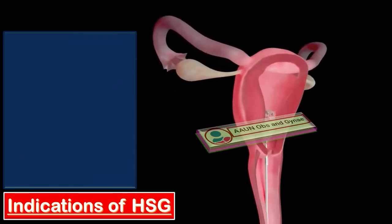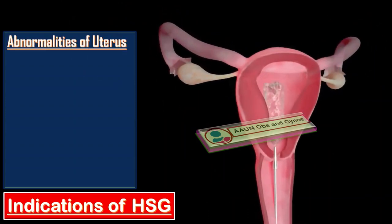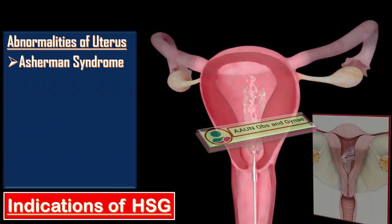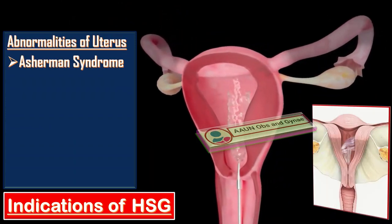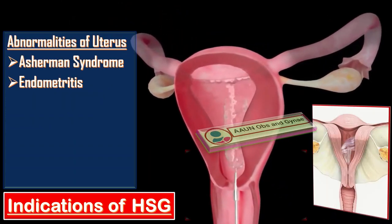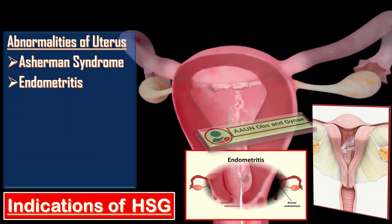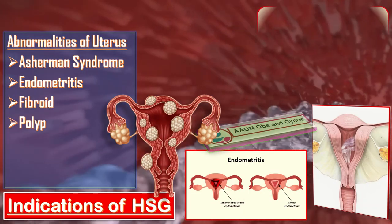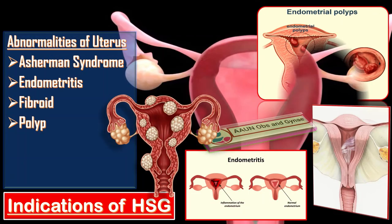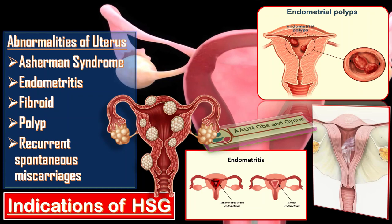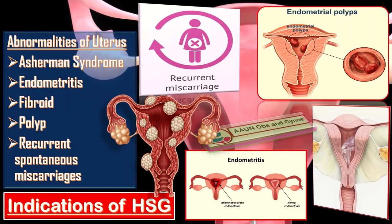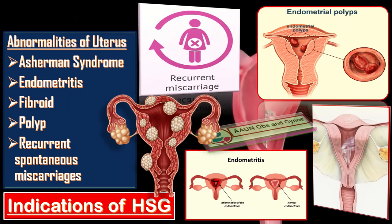The indications of HSG include diagnosing different abnormalities of the uterus, such as Asherman syndrome, endometritis, fibroids, and polyps, as well as the workup and evaluation of recurrent spontaneous miscarriages.